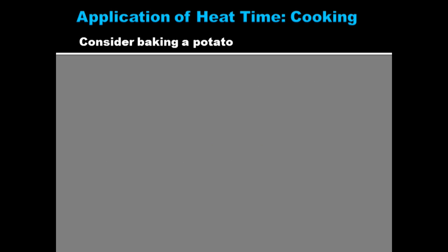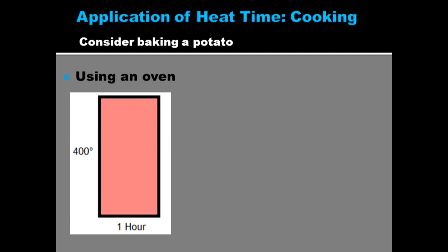Let's look at an application that everybody can understand. Make it simple. Cooking. If we want to bake a potato and we put it in the oven for an hour and it's 400 degrees, that'll probably cook it. So here's a graph of the temperature and the time on two axes showing in a rectangle. And that's going to cook the potato.